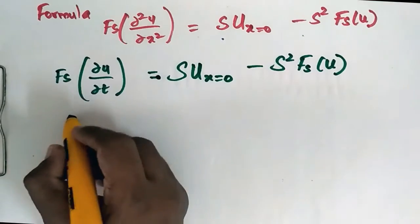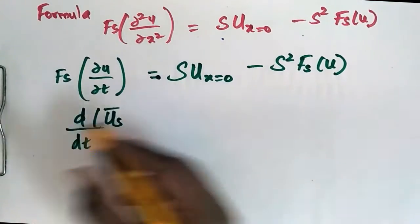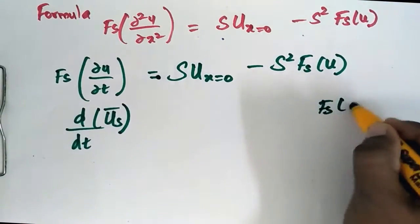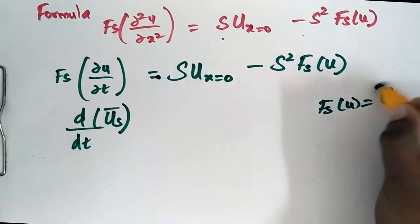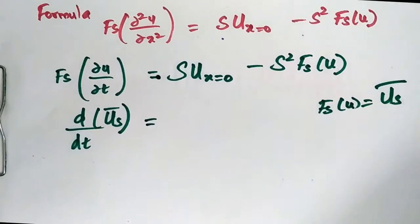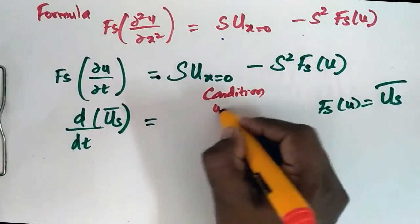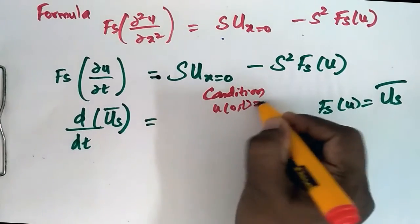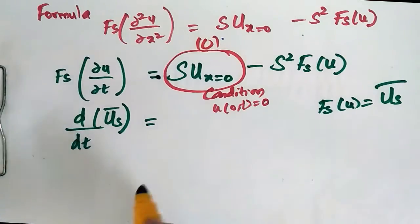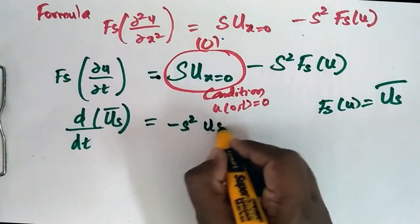Let Fs(u) = ū_s. The left side becomes d/dt of ū_s. We have the condition u(0, t) = 0, so the boundary term vanishes, giving d/dt of ū_s = −s² ū_s.